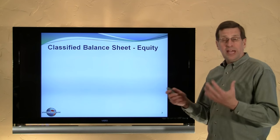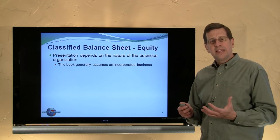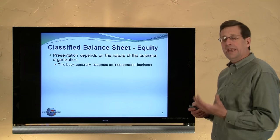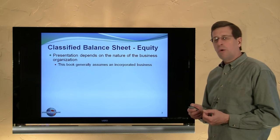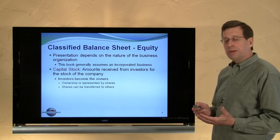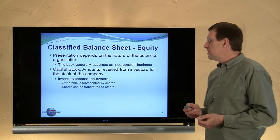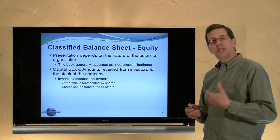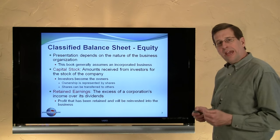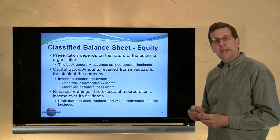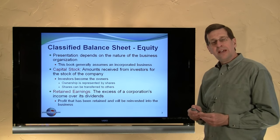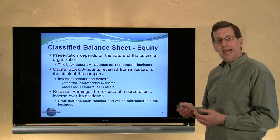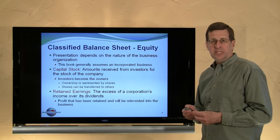The last section of the balance sheet is the equity section, and what you would expect to see there depends on the nature of the entity. Assuming a corporate entity, we would have capital stock — the amounts received from investors at the time the stock of the company was issued, representing ownership through transferable shares. The other key category is retained earnings: the excess of a corporation's income over its dividends distributed — profit that has been retained in the business.